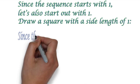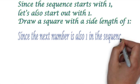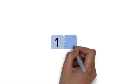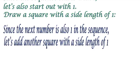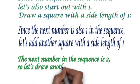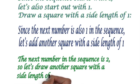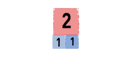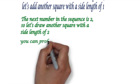Since the next number is also 1 in the sequence, let's add another square with a side length of 1. The next number in the sequence is 2, so let's draw another square with a side length of 2. You can probably guess the next square in the sequence.